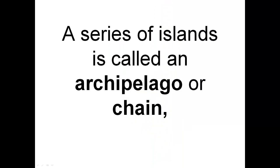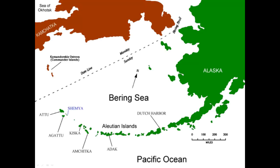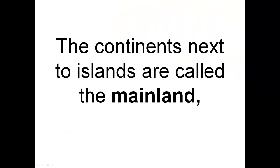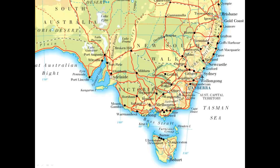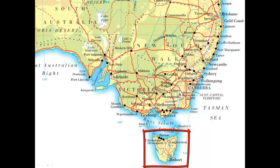A series of islands is called an archipelago or chain, like the Aleutian chain. The continents next to islands are called the mainland — so there's mainland Australia with Tasmania down below.